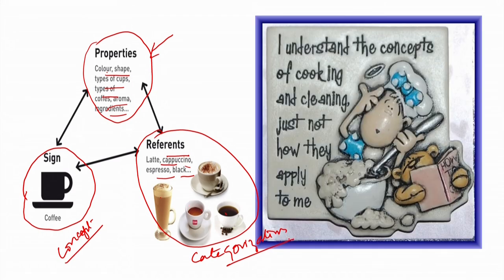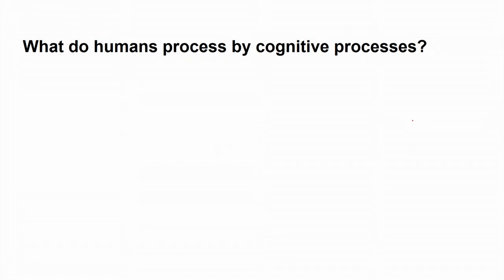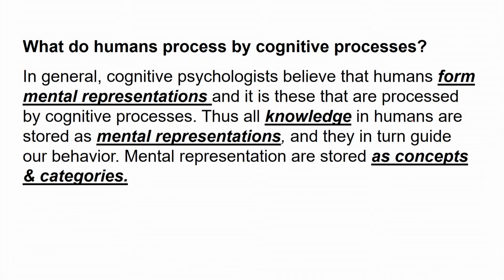A funny cartoon on the right explains: a lady says she understands the concept of cooking but does not know how it applies - Mr. Deirdre does not want to cook, and that may be the reason she is saying what she is saying. Coming back to the definition of concepts, before we understand that, let us look at what humans do through cognition and what cognitive processes actually do.